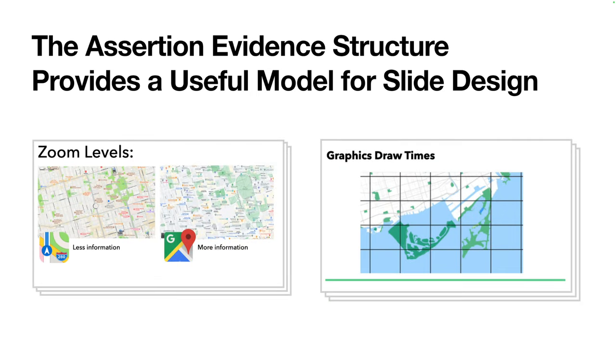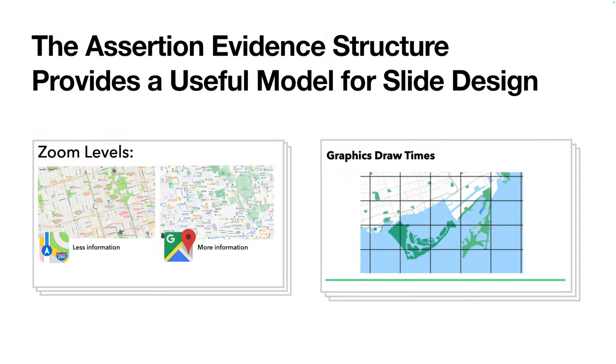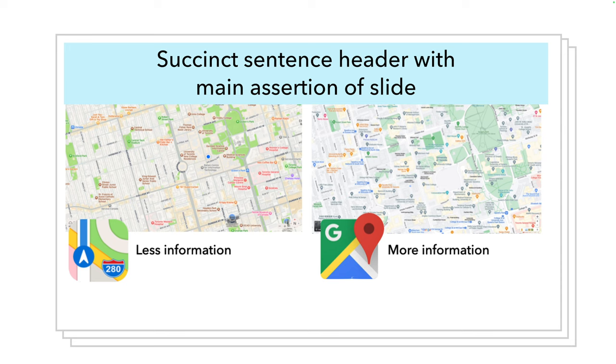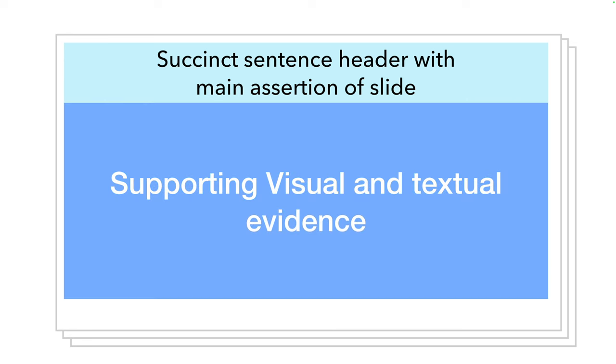In these two slides, for example, we see some visuals in the body but remain quite unclear on how to interpret them. It is possible that in our speech we help the audience understand this, but we can design our slides to help interpret the information more effectively simply by rethinking the headings at the top. In these slides, they serve as topic statements rather than assertions, and the meaning of those visuals below remains unclear. The assertion evidence model gets presenters to instead develop a succinct sentence header with a main assertion of the slide at the top, as that's the area of initial focus for our eyes.